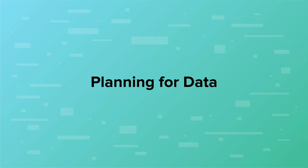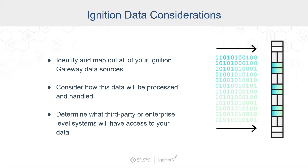The third part of the planning process is your data sources. It's a good idea to identify and map out all the data sources that feed into your Ignition gateway — things like PLCs connected directly, databases, MQTT servers, OPC UA servers, REST APIs, connections to SAP or other ERP systems, files, and barcode scanners sending data over the network. Have a spreadsheet that gives you that understanding, because it will help you understand how you're going to use each data source in the application. It'll also give you a better picture for security — which connections are secure and which are not.